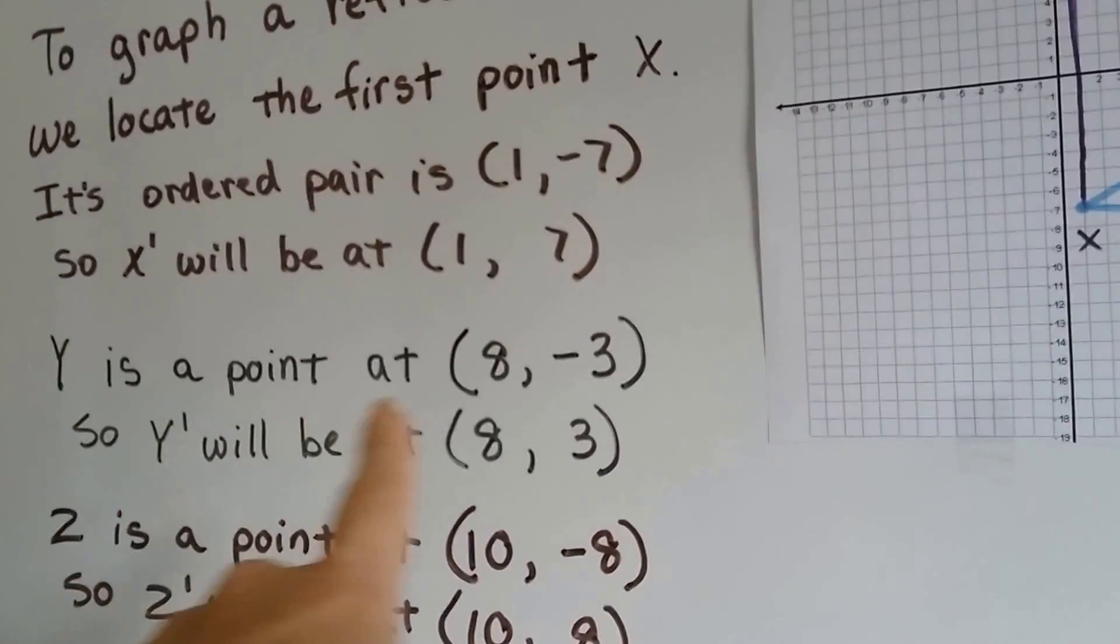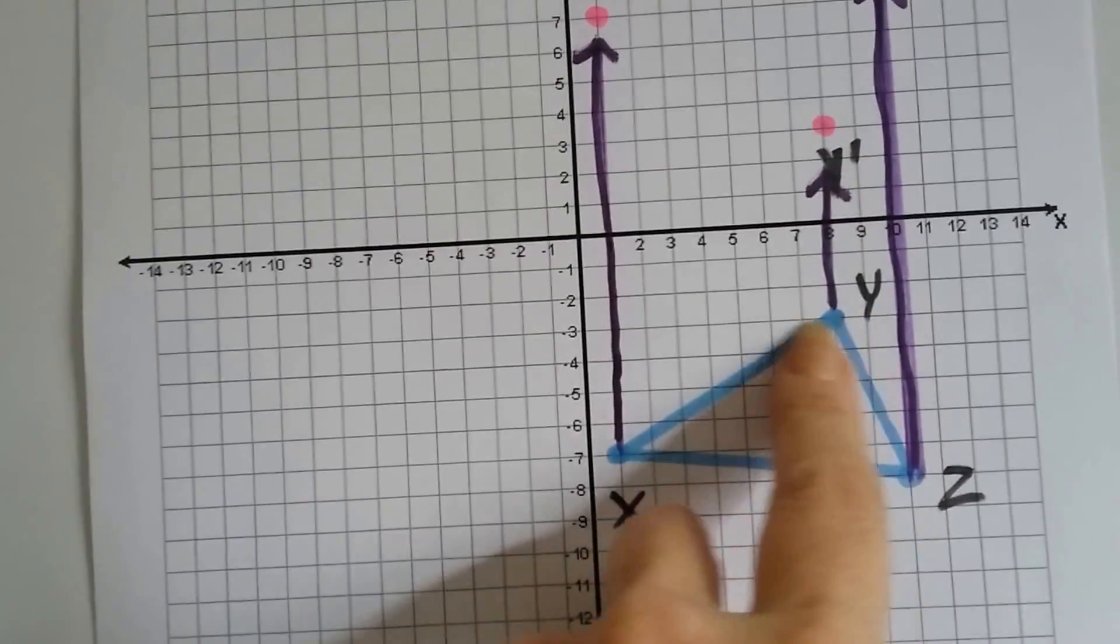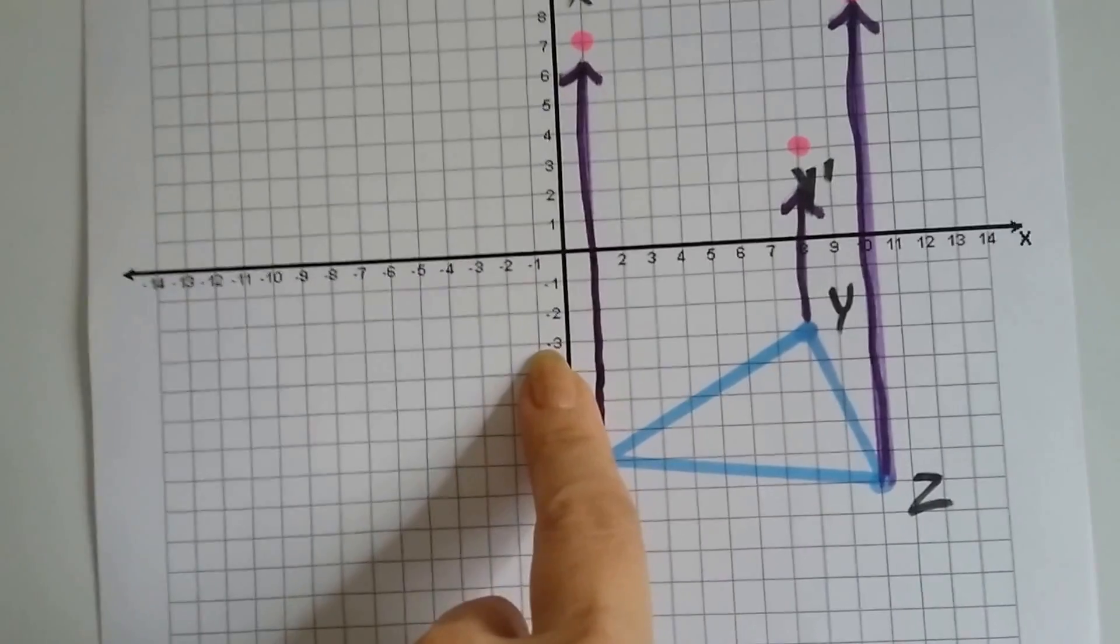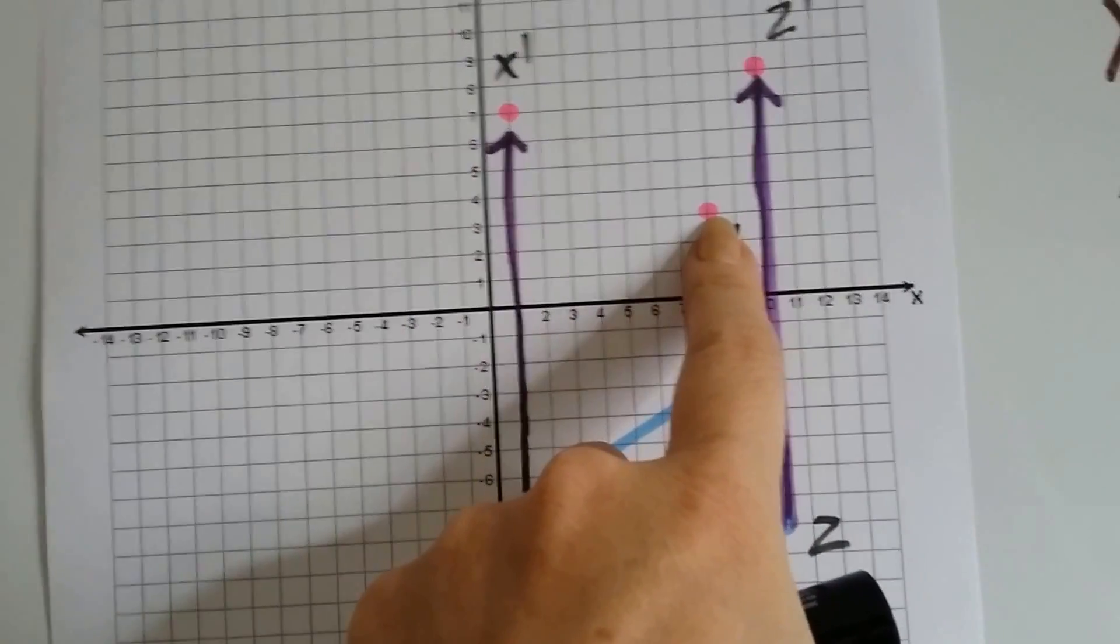For y, y is at 8, negative 3. It's right here. It's at 8, negative 3. So y prime is going to be opposite. It's going to be at 8, positive 3.